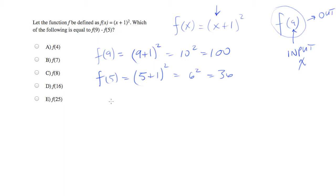Now we've actually been asked to find which answer choice is equivalent to f of 9 minus f of 5, but we can plug in the values that we got to yield 100 minus 36 is equal to 64.